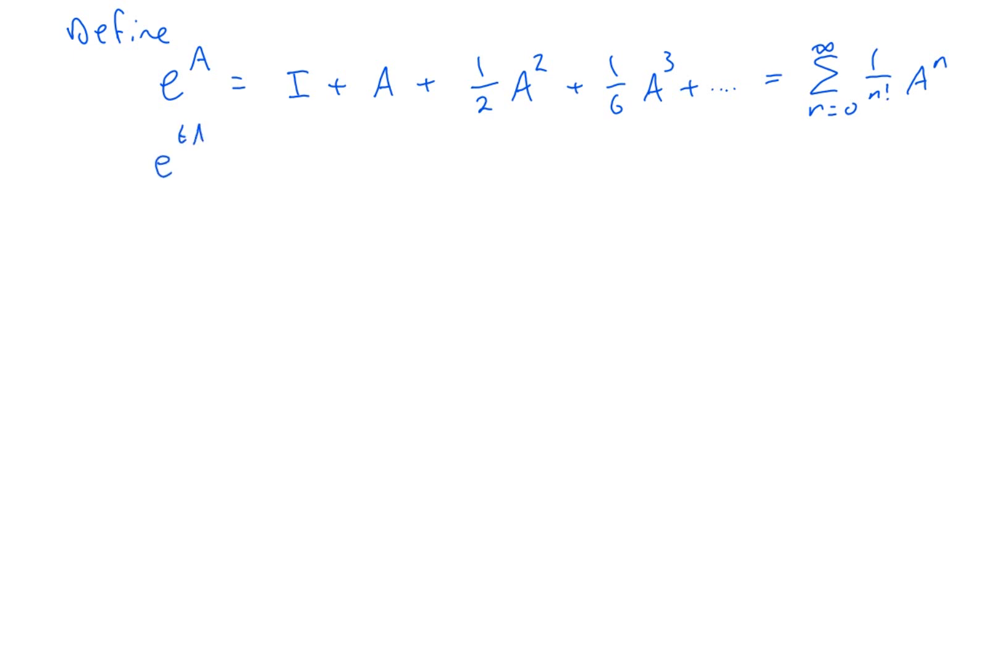That would mean e^(tA) would be I + tA + (1/2)t²A² + (1/6)t³A³ and so on. So now I get the matrix exponential where it depends on t, which means I could differentiate that with respect to t.